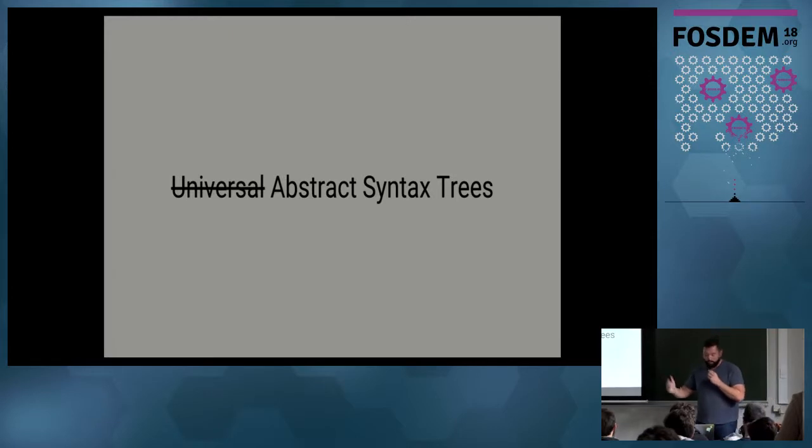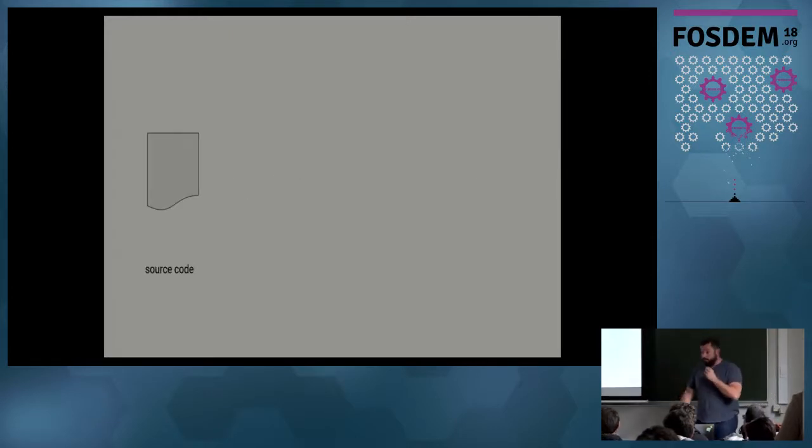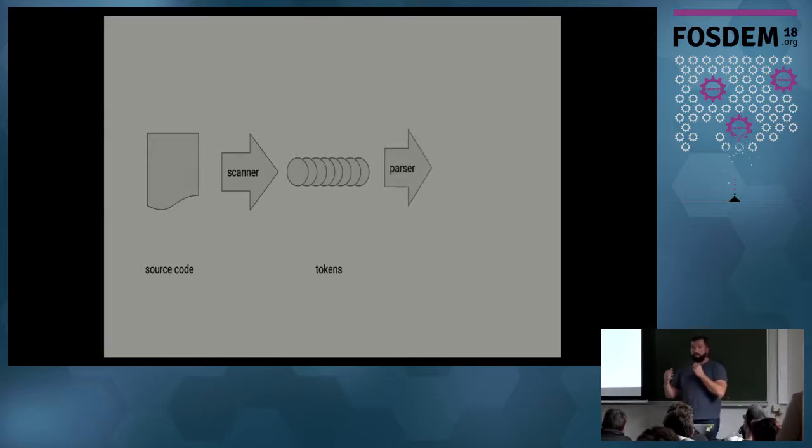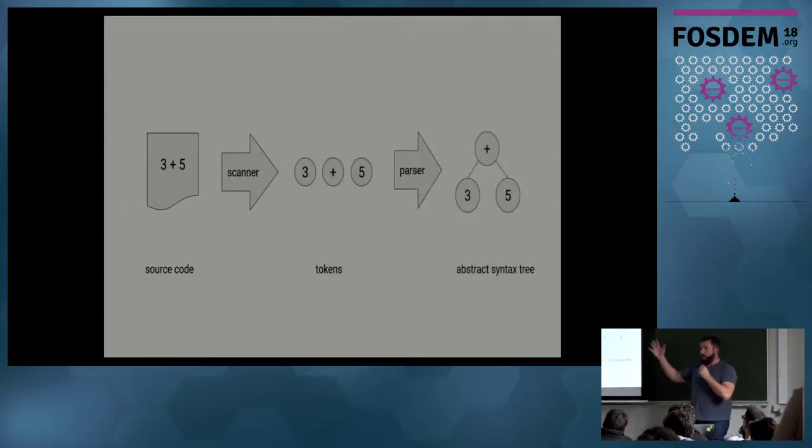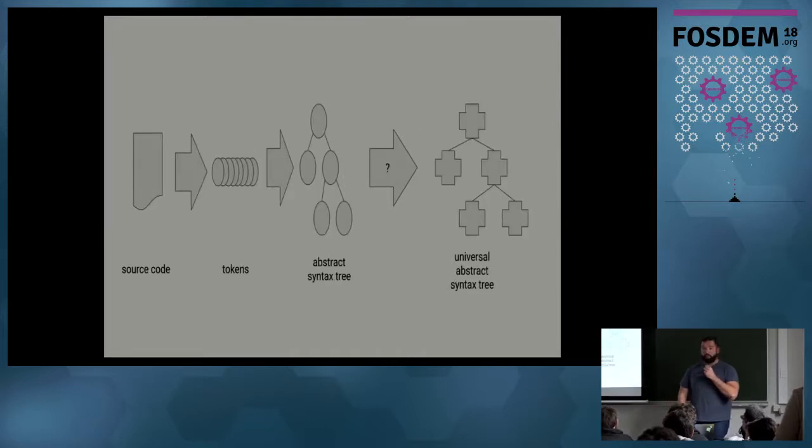Really quick: you have source code, you scan that source code, you obtain tokens, and those tokens are just a sequence of tokens. And thanks to the language grammar, you're able to use the parser and extract the structure. And you get an abstract syntax tree. So 3 plus 5, you get 3 plus 5 tokens, and then you get actually that structure.